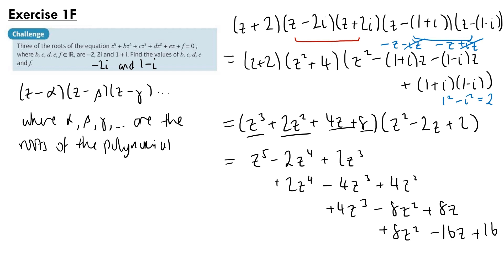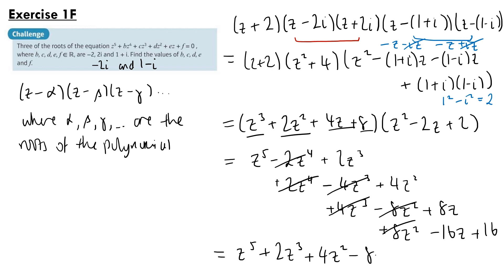Multiplying by 8 gives plus 8z squared minus 16z plus 16. Collecting like terms: z to the power 5; the 2z to the power 4 terms cancel; the z cubed terms give 2z cubed; the z squared terms give 4z squared; and finally minus 8z plus 16. So the values of b, c, d, e and f are 0, 2, 4, minus 8 and 16 as required.